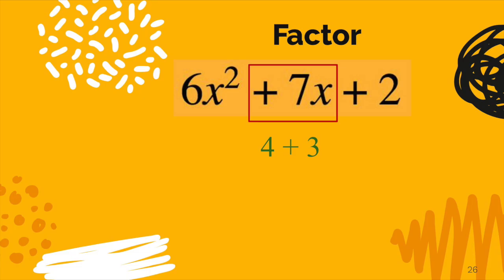We're going to take the 7x and we're going to split it into 4 and 3. In other words, 4x + 3x. Bring back the other terms there, 6x² + 4x + 3x + 2. That's the same as our original polynomial there.